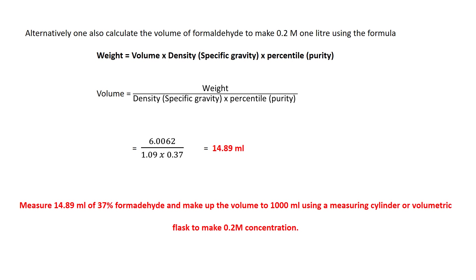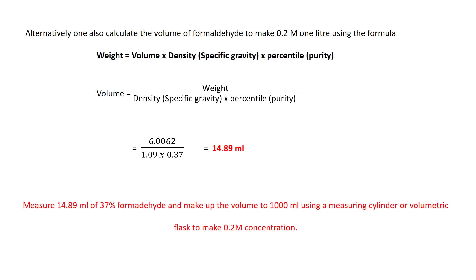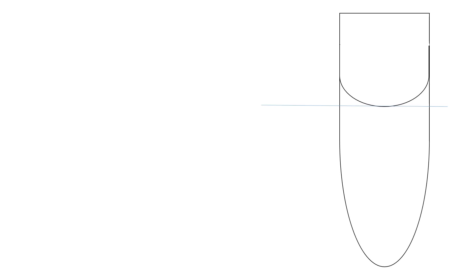This 14.89 mL of 37 percent formaldehyde should be made up to 1000 mL using a measuring cylinder or volumetric flask to achieve 0.2 molar concentration.